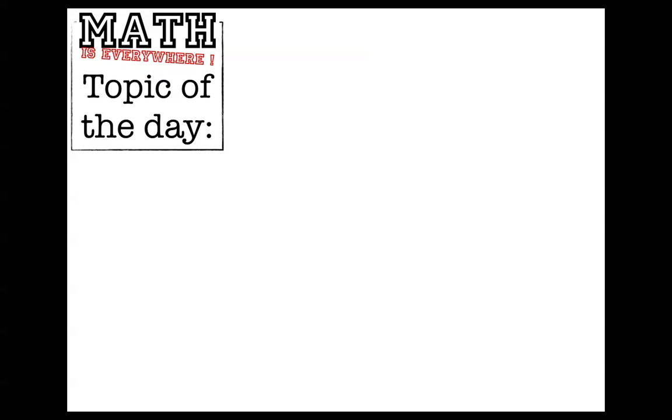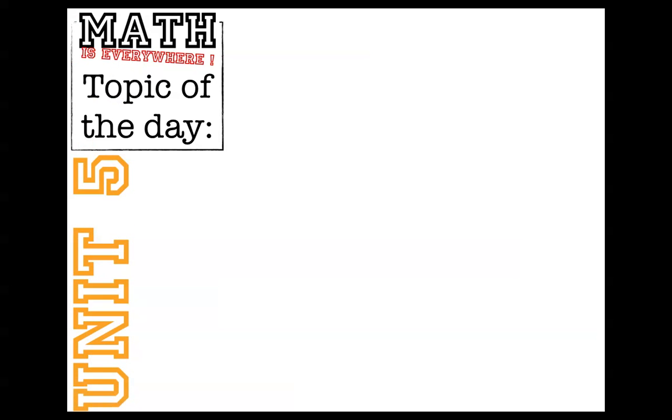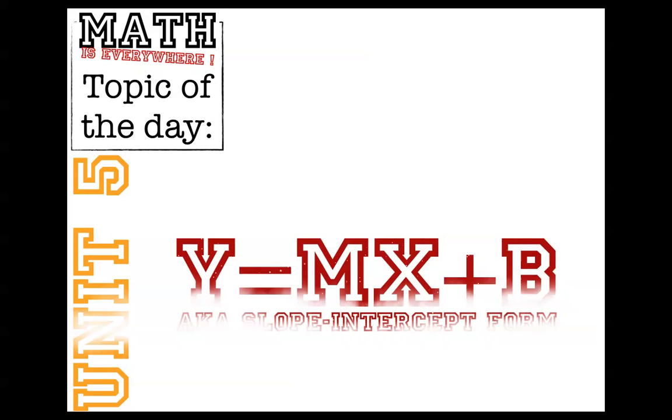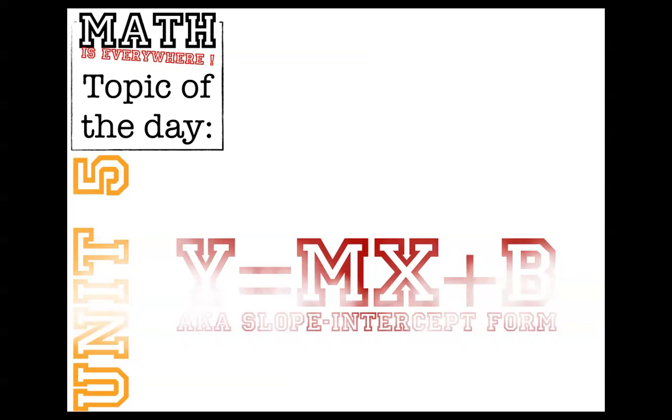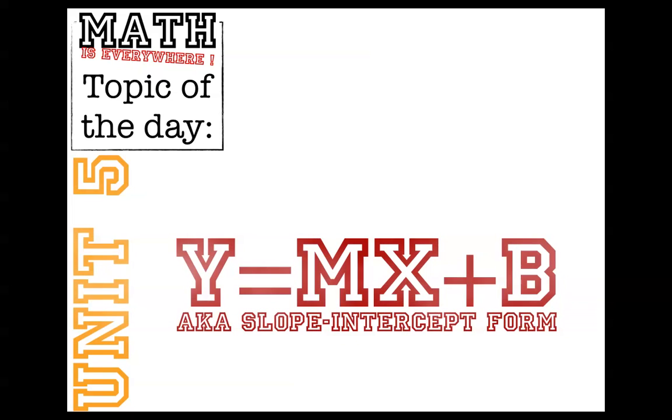Greetings and welcome to another Math is Everywhere video. Today, our topic in Unit 5 is our last topic in Unit 5. I know you're going to be sad, but we've got to finish it sometime. Today we're talking about y equals mx plus b, which is an equation that we call slope-intercept form. That might not make much sense to you right now, but it will. So, here we go.